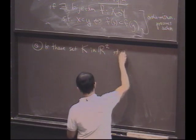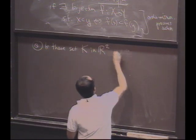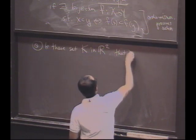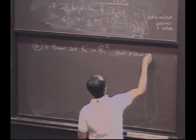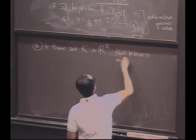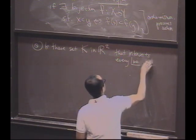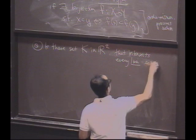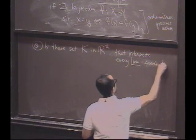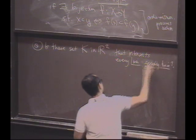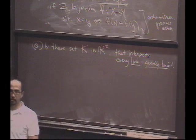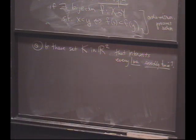Such that, or that intersects every line in the plane exactly twice. Is there a set in the plane that intersects every line exactly twice? What do you think?